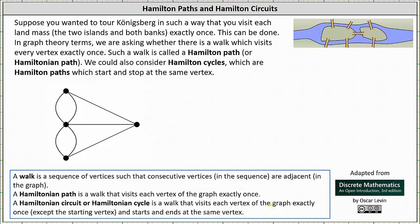Let's find a Hamiltonian path for the given graph, then also determine if there's a Hamiltonian circuit. We can begin with any vertex — let's start at the top. We need to form a walk that visits each vertex exactly once. We go down to the right, down to the left, and back up to the last vertex. This is a walk that visits each vertex exactly once — an example of a Hamilton path. Notice we can also return back to the starting vertex without visiting any other vertex twice, making this a Hamilton circuit.